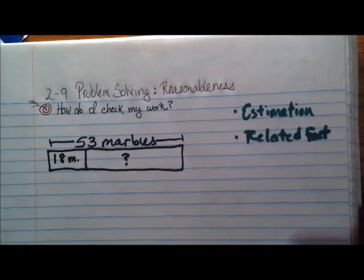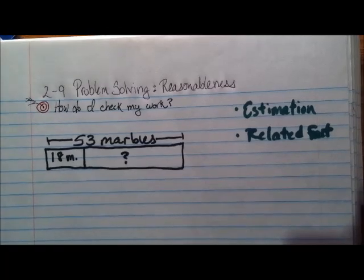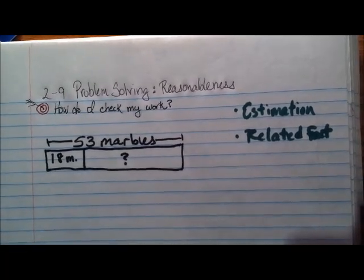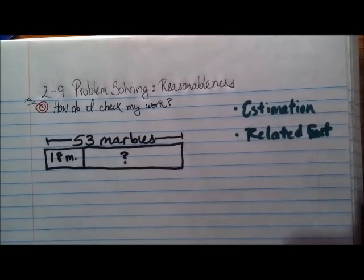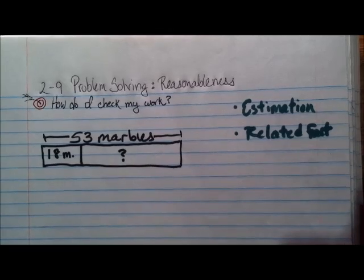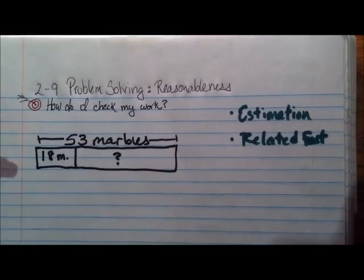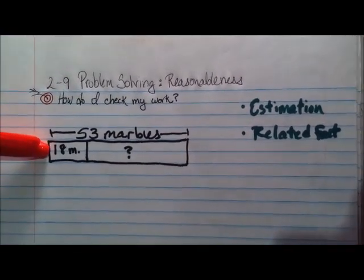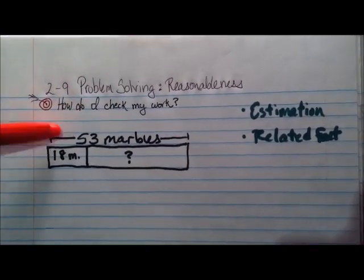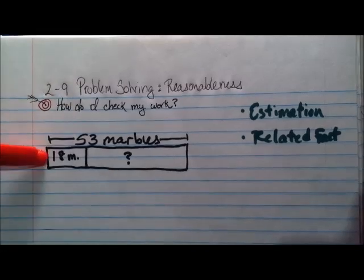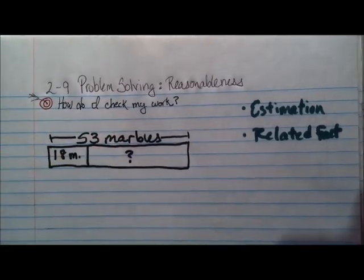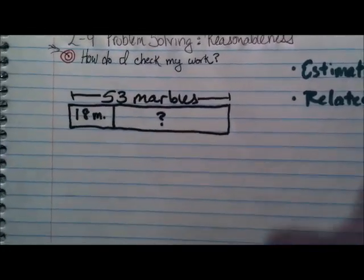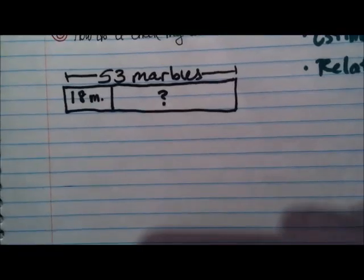Let's look at this example problem. We have 53 marbles and we're going to give them all away because we're feeling very generous. So far we've given away 18 of them. We started with 53, we're giving away 18 — how many do we have left? Simple subtraction problem, right? Let's solve it and see what happens.